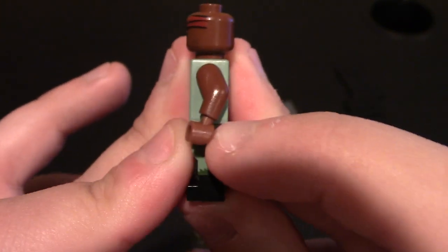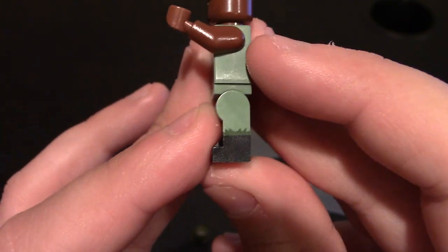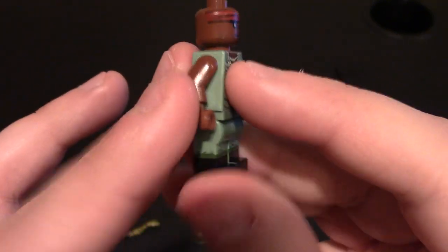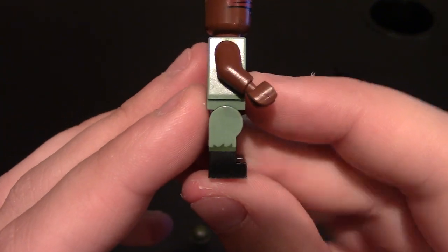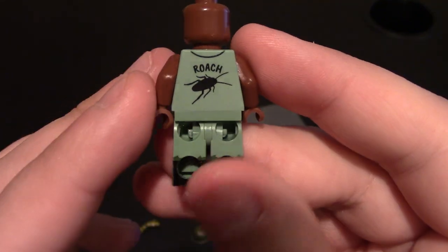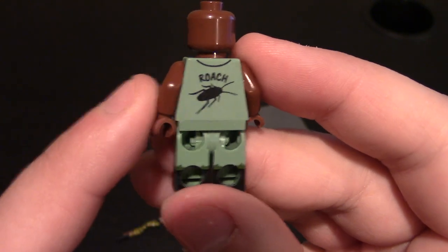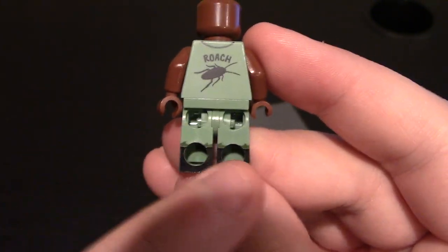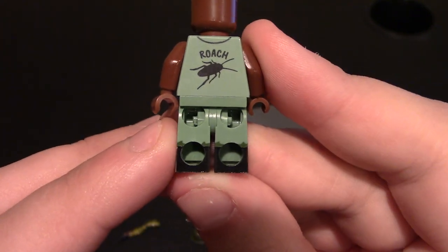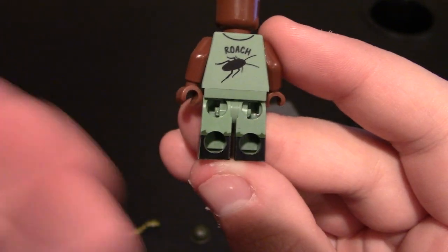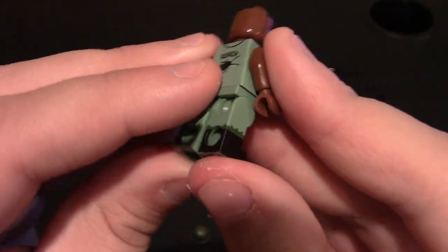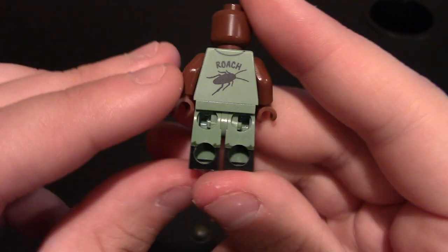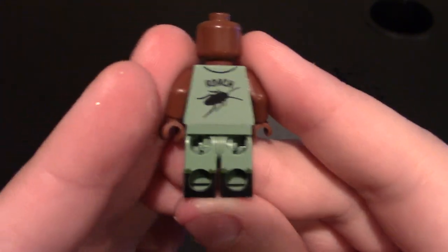Coming to the side, no printing on the side of the body or arms, but there is side printing on the legs. The pants are tucked into the boots on both sides. Coming to the back, you can see he has a Roach logo, the collar of his vest, and back printing on the legs which is nice. They're starting to get into back printing on the legs which I like a lot.